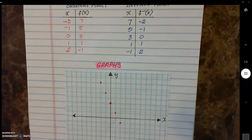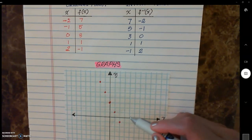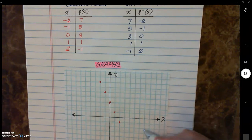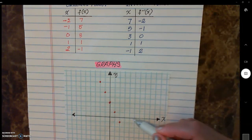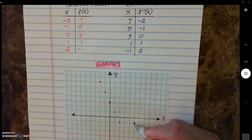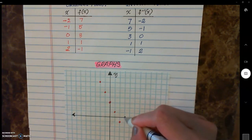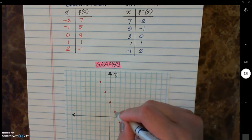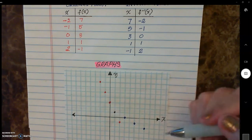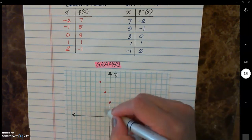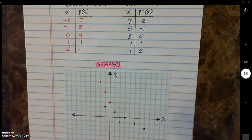Now let's plot the inverse points. We have 7 comma negative 2; 5 comma negative 1; 3 comma 0; 1 comma 1 — which coincides with the original point; and negative 1 comma 2. The red dots represent the original function and the blue points represent the inverse function. Connecting the points lets us clearly see what's happening with the graph.